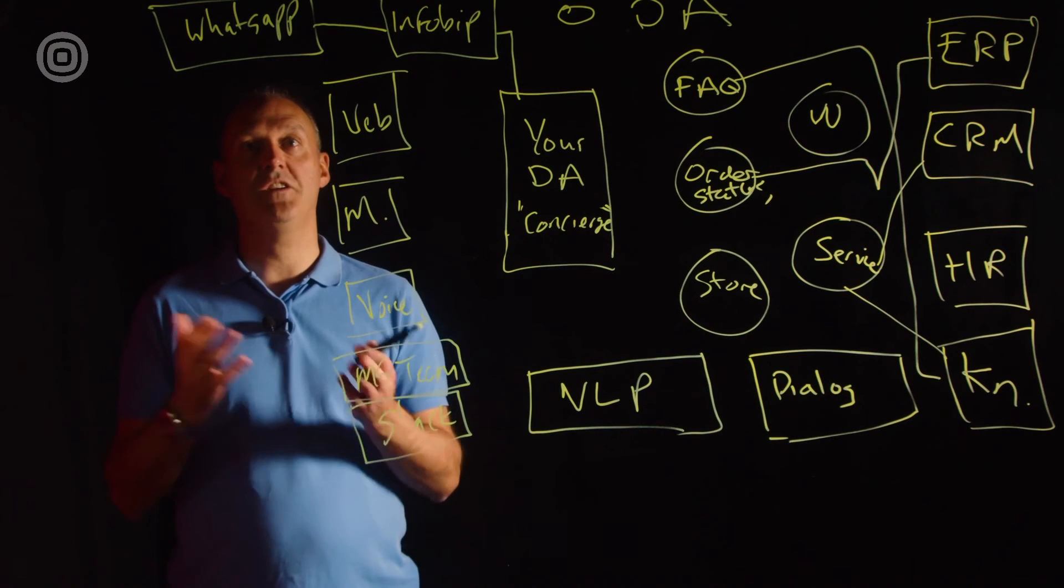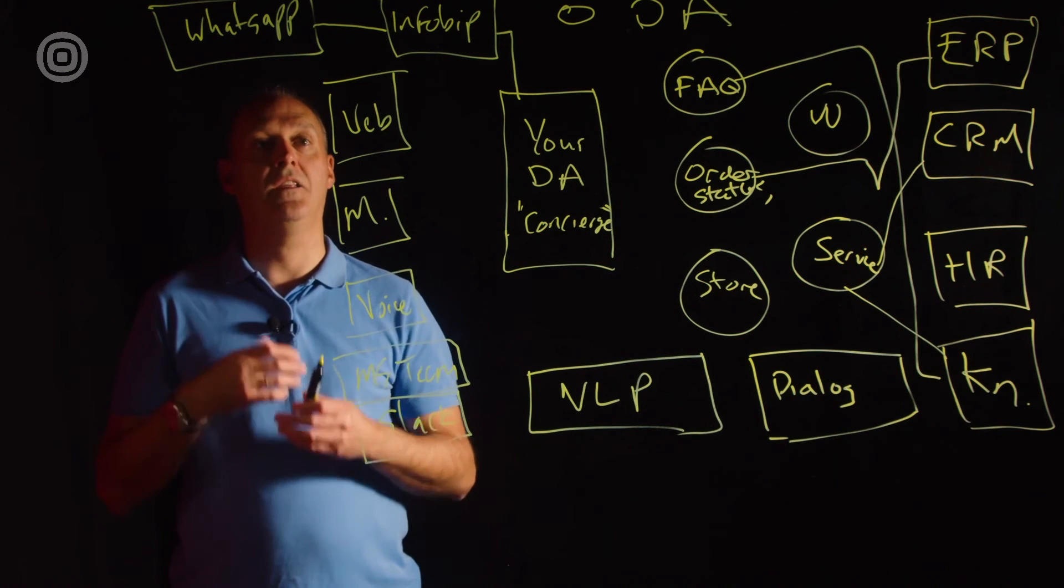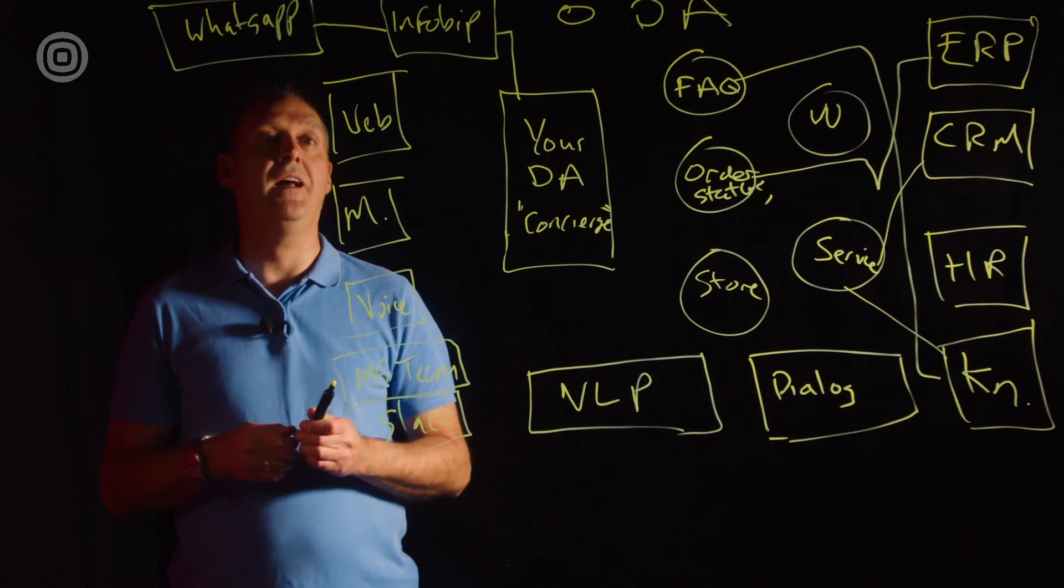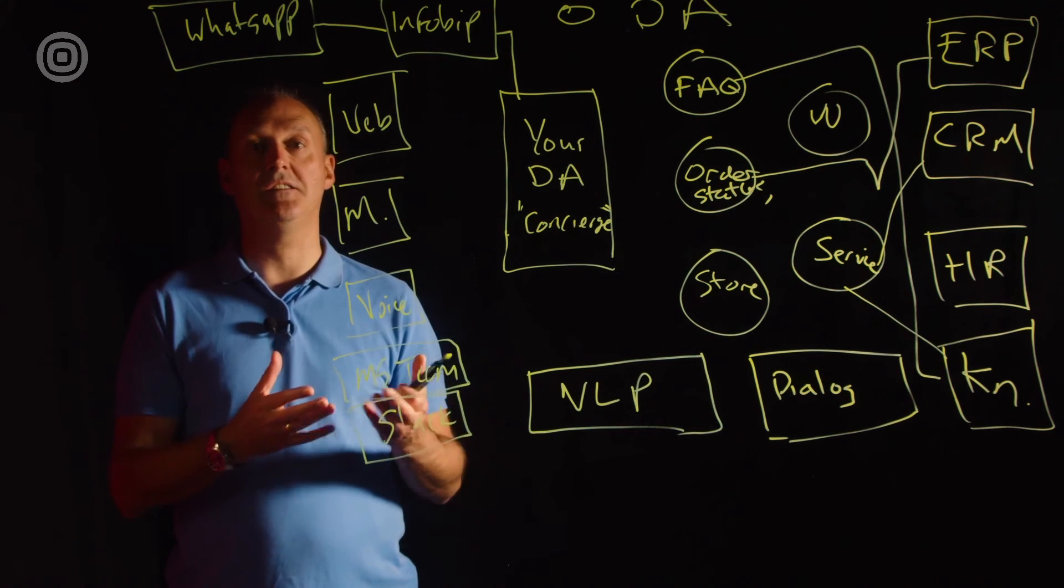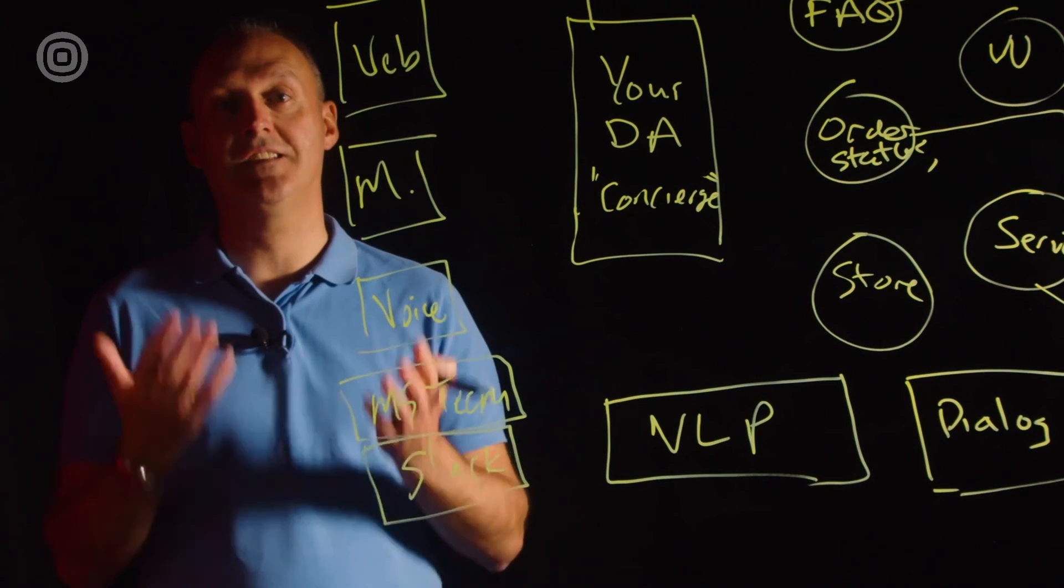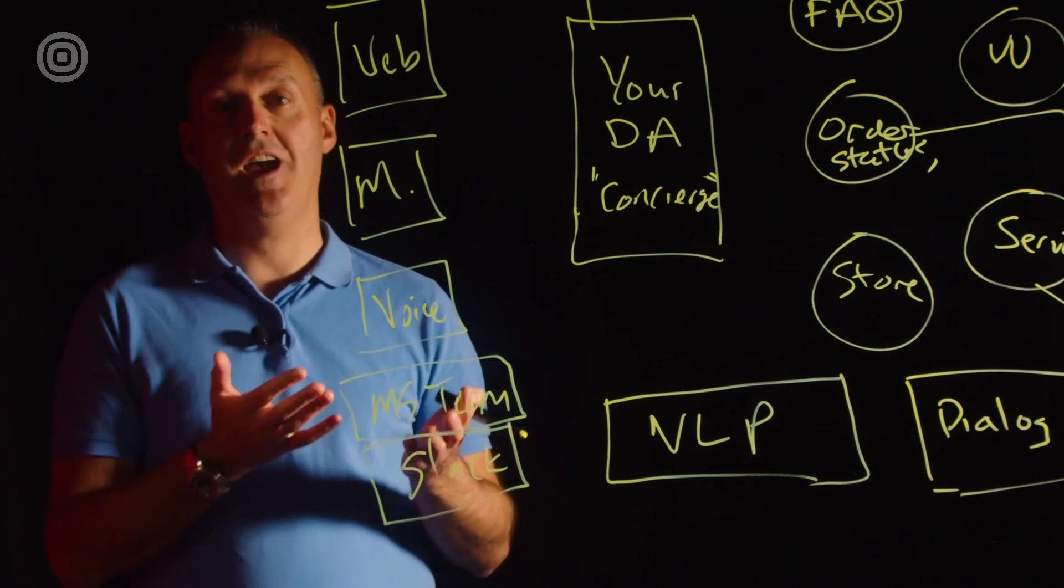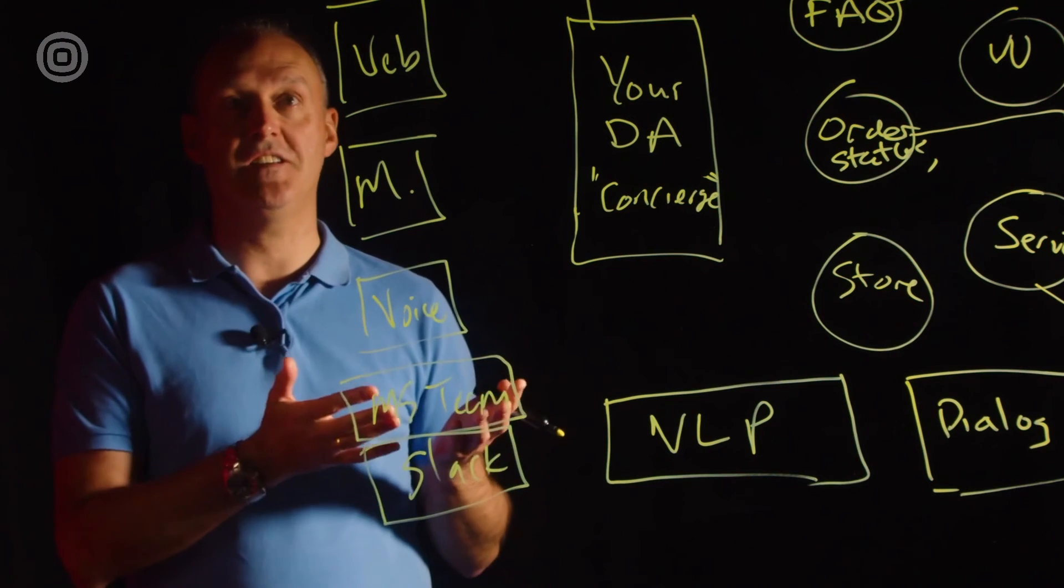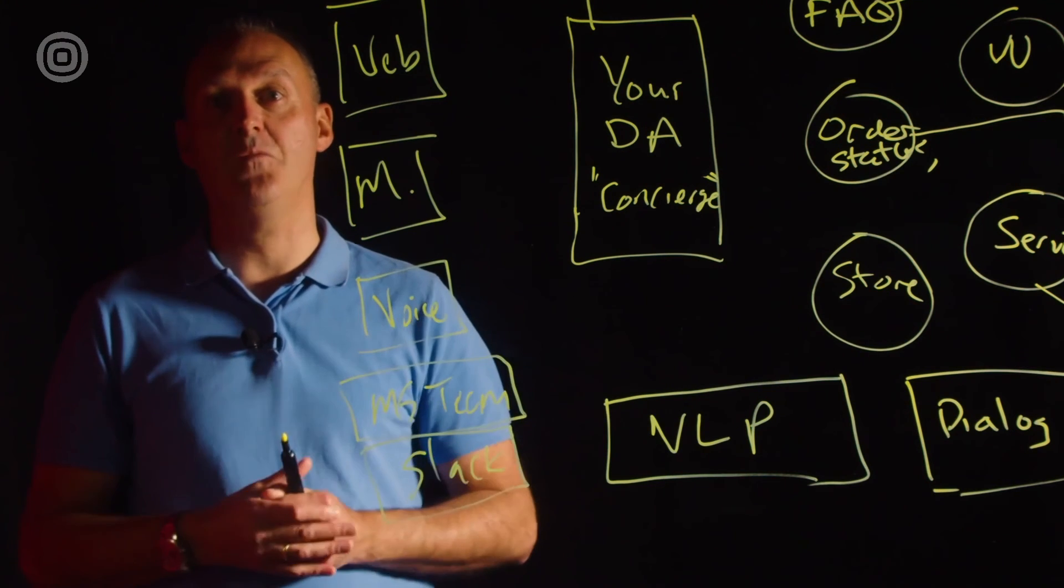InfoBip handles your registration with WhatsApp for Business, the registration of the telephone number, and then all the connection back to digital assistant itself. That way it dramatically simplifies and accelerates your ability to deliver a chatbot from digital assistant through to your end users running on WhatsApp.